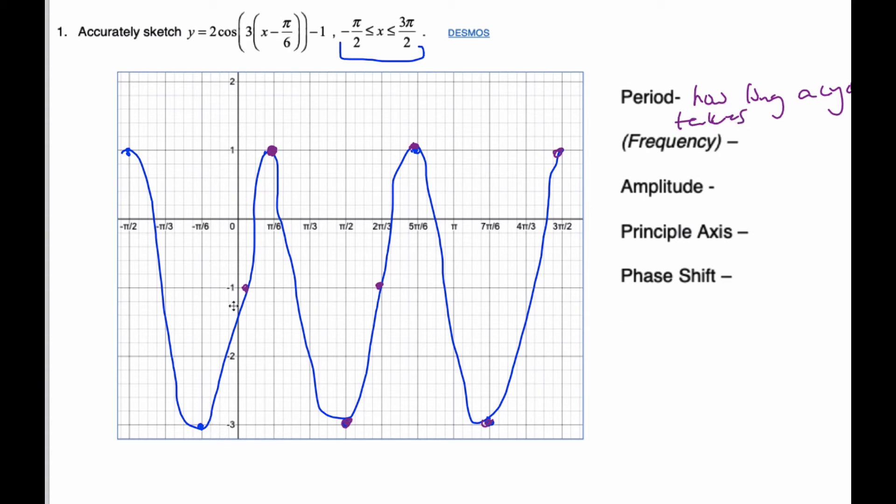And to calculate the period, what we do is, in this case, I know my period goes from pi by 6 to 5 pi by 6. And so I know this distance here is 4 pi by 6, which is 2 pi by 3. So the period in this case is 2 pi by 3. And the way I can find it is there's a formula for period. I know the period is equal to 2 pi over the b value. And so I know it's 2 pi, the b in this case is 3, so 2 pi over 3 is the period.